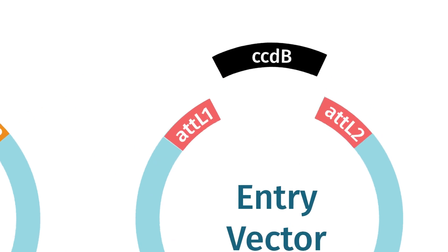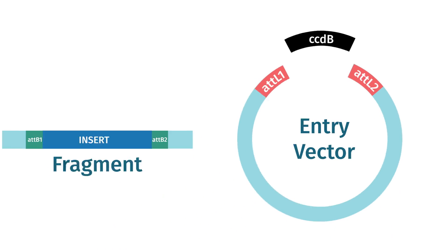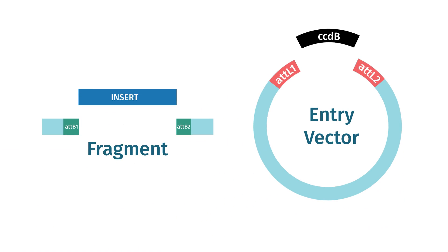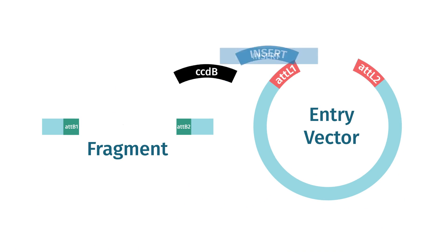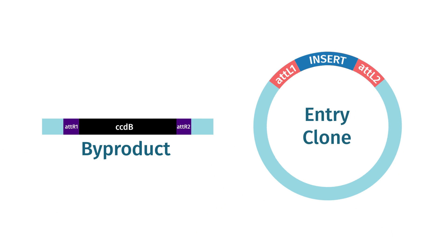The CCDB cassette is located between the AT sites and is toxic to E. coli. Successful cloning replaces the CCDB cassette with the fragment of interest, ensuring only recombinant plasmids can propagate.